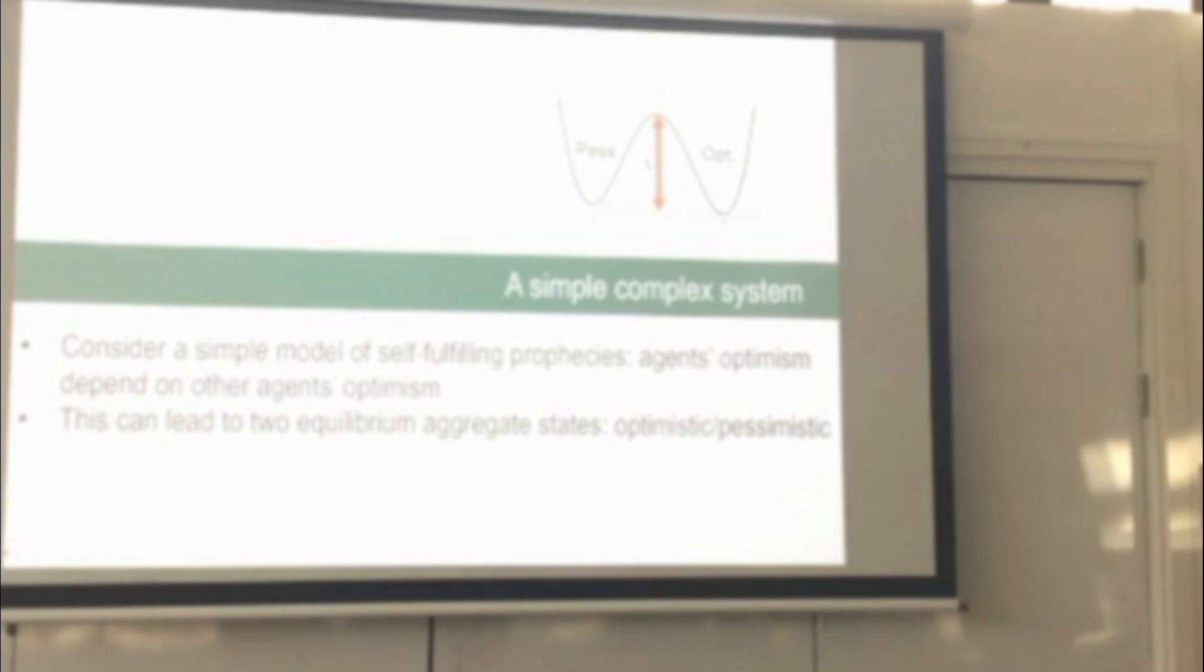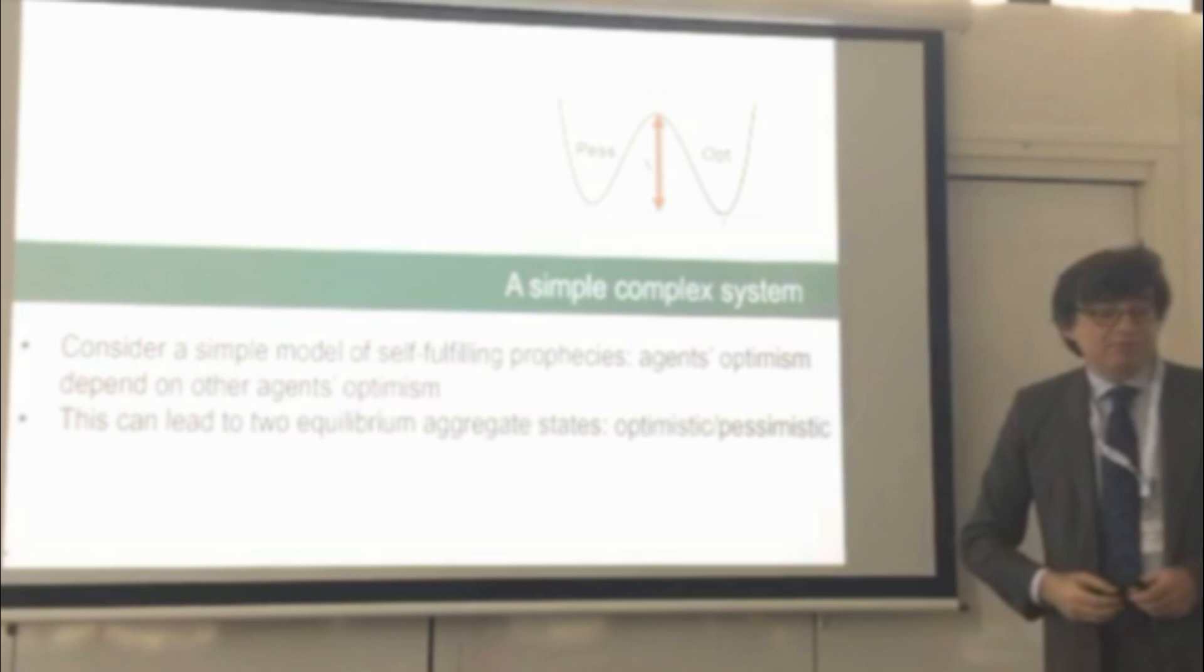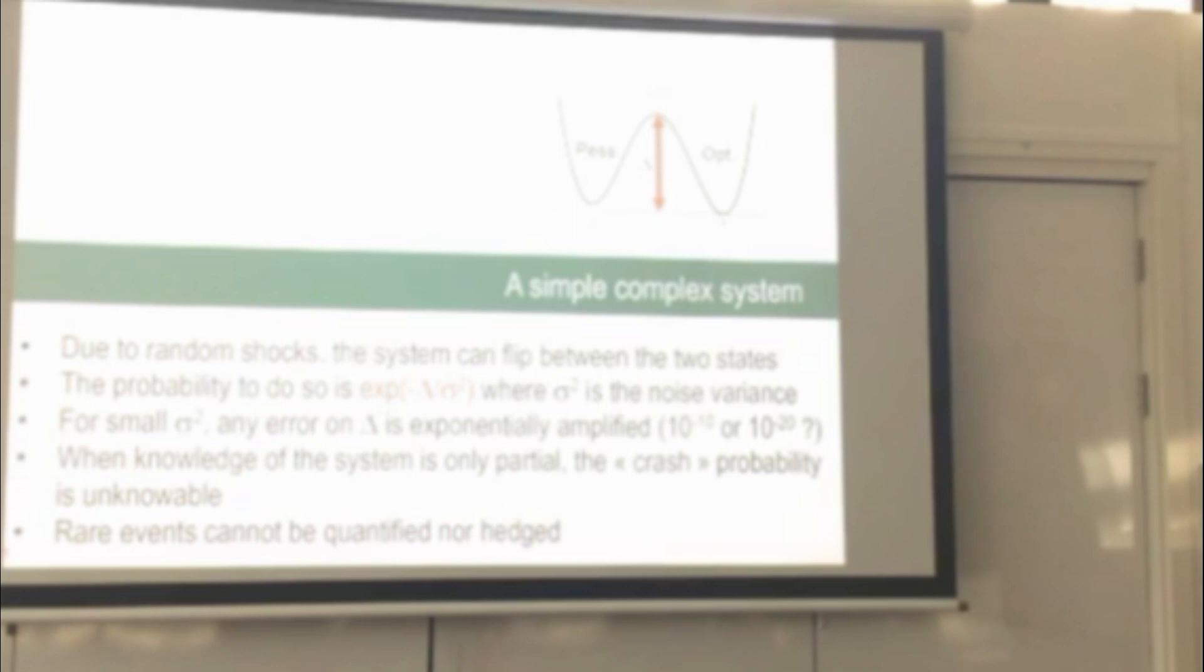So it's a simple model of self-fulfilling prophecies, where agents' optimism depends on other agents' optimism. So if everybody's optimistic, then everybody's optimistic, and vice versa. And you can think of this model as roughly these two wells, these two valleys. One corresponds to a globally optimistic state, which is persistent, and one where it's globally pessimistic. But due to random shocks to the economy, the system can flip from one state to the other.